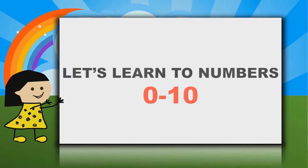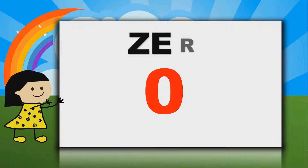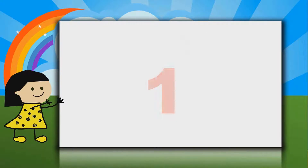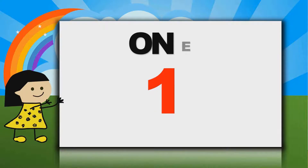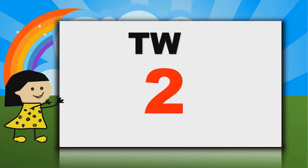Let's learn numbers zero to ten. Number zero, Z-E-R-O. Number one, O-N-E. Number two, T-W-O.